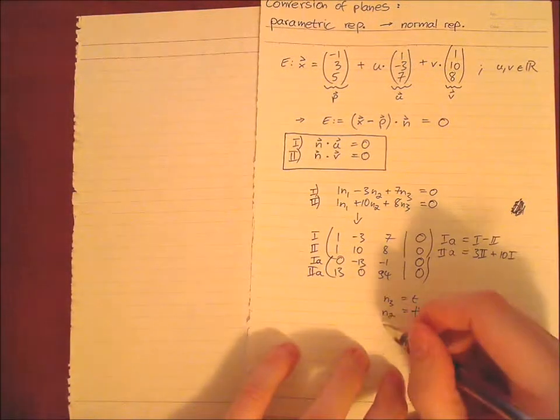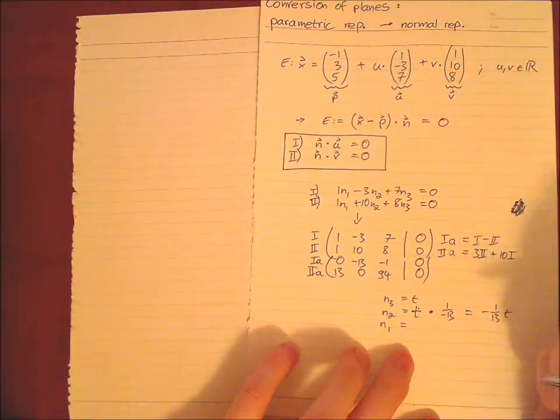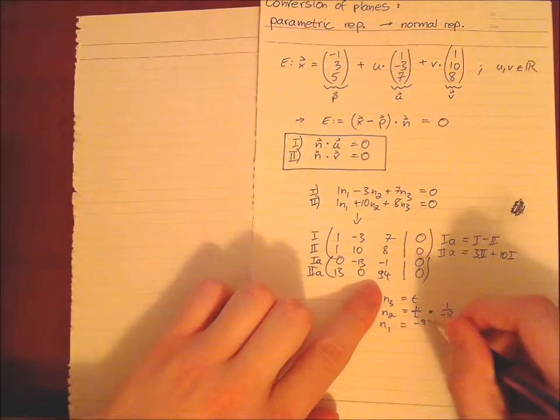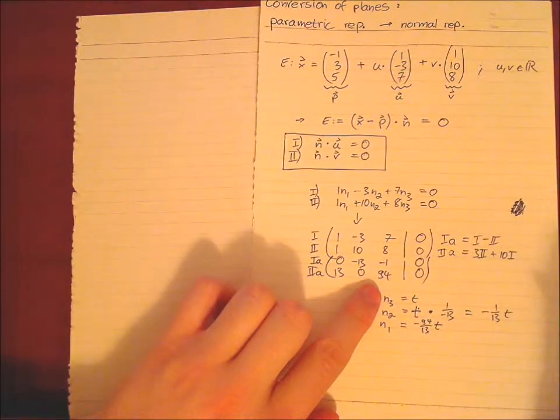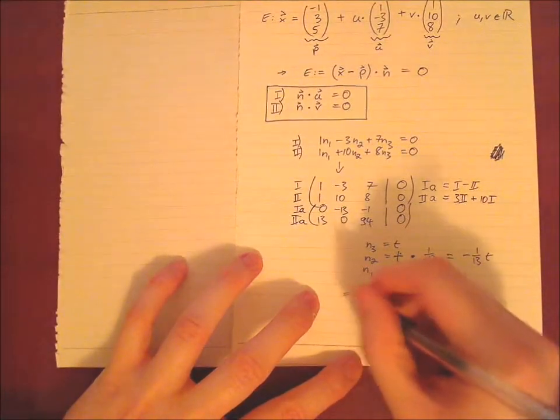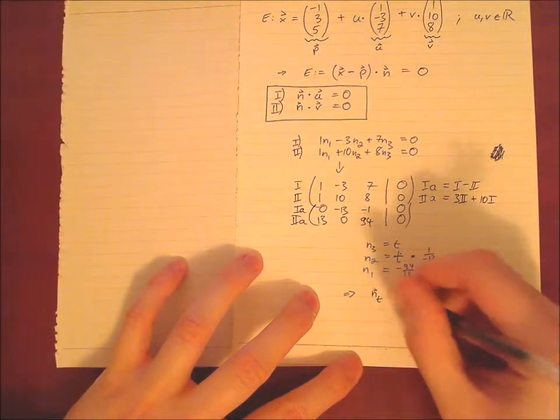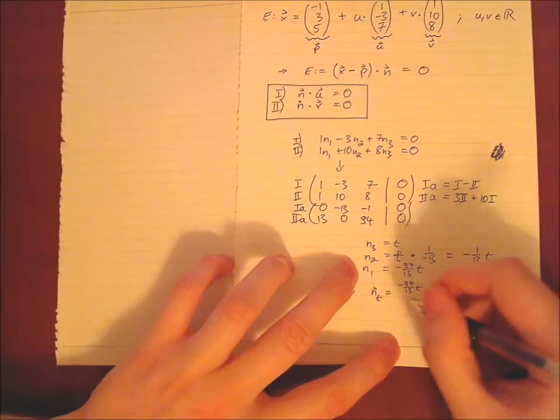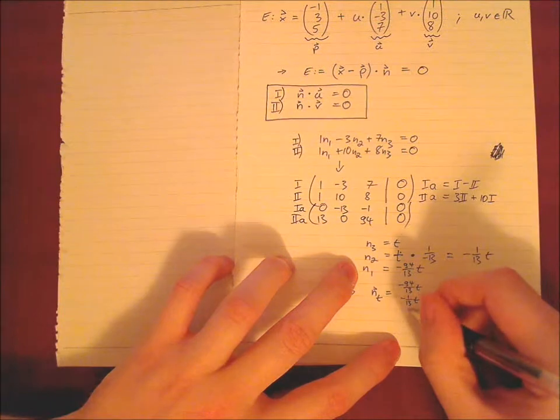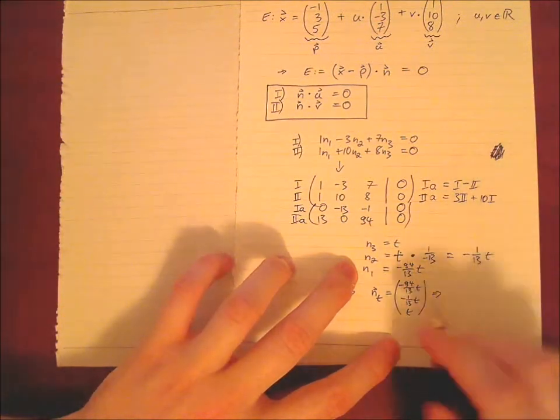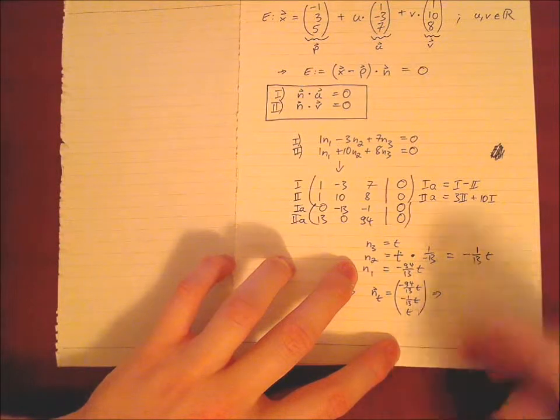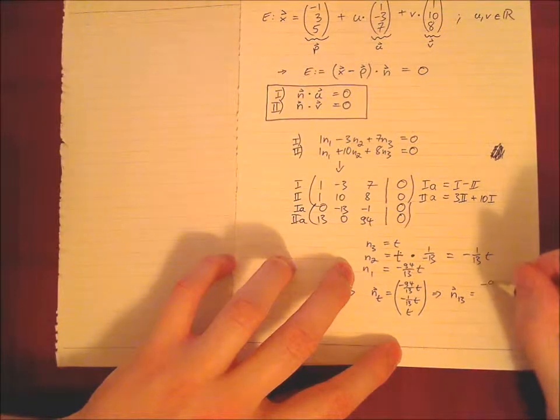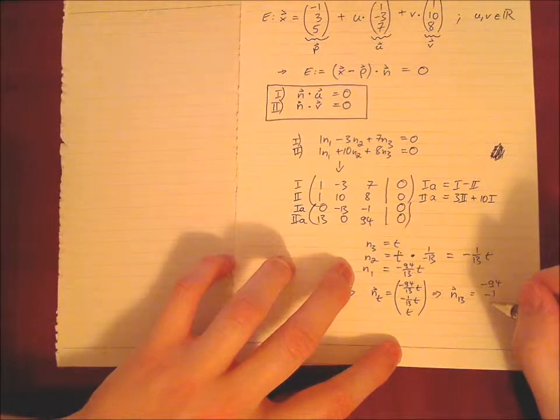And n1, there we have, we put the 94 also to the right side. So we have minus 94, minus 94 divided by 13 with a t. So now we have found the general normal vector which is then (-94/13)·t, (-1/13)·t, and t. This is a general normal vector. And to make life easy we want to set t = 13 to receive some nice values. So we say n₁₃ is (-94, -1, 13).